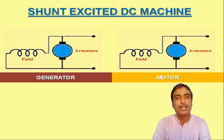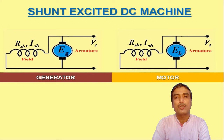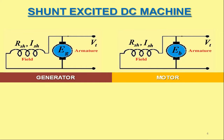Now, shunt excited DC machines. These are the representations of shunt excited DC generator and motor. The shunt field winding resistance is RSH and the current in the shunt field winding is ISH. EG and EB are the generated EMF and back EMF in the armatures of the shunt excited DC generator and motor respectively. VT is the output terminal voltage of the shunt excited DC generator, while in case of DC motor VT is the input terminal voltage. The armature resistance is RA and armature current is IA. IL is the output or input current as the case may be, with directions represented by red arrows.